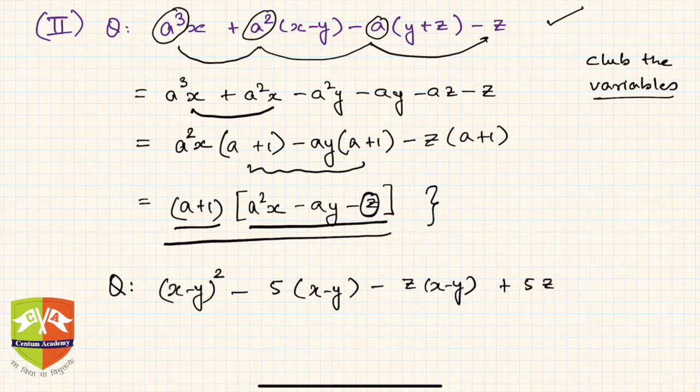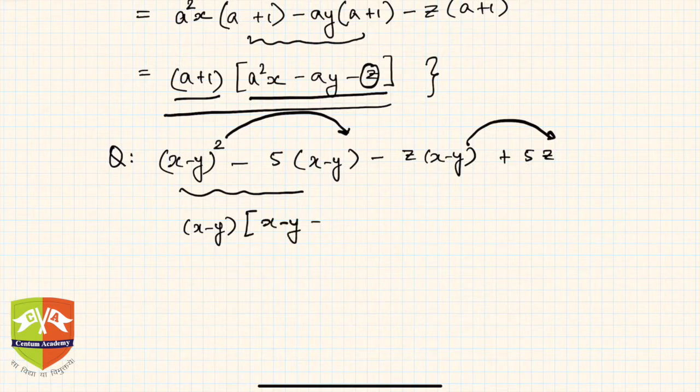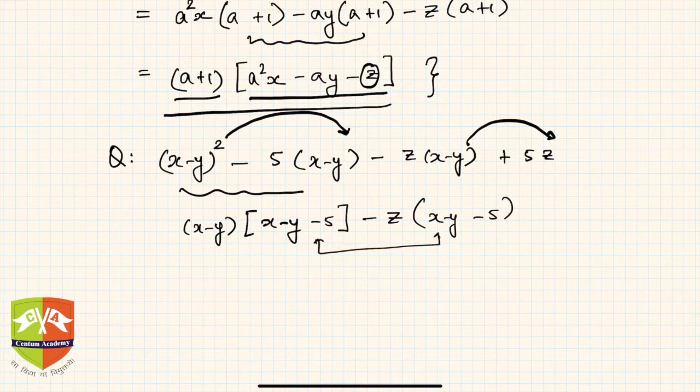Let's do that. If you see (x-y), you take it common. What is left within is nothing but (x-y) - 5. And here also if you take z common, you'll get (x-y) - 5. Again we got these two terms common.